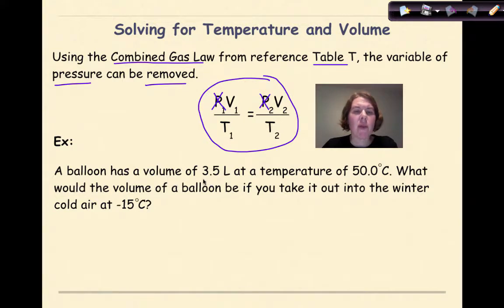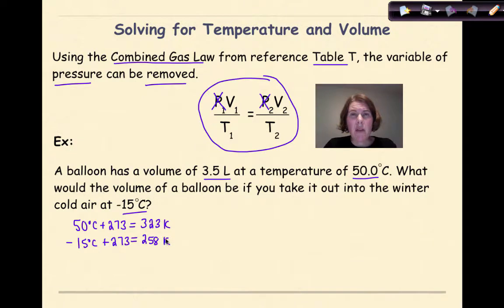A balloon has a volume of 3.5 liters at a temperature of 50 degrees Celsius. What would the volume of the balloon be if you take it out into the winter cold air at negative 15 degrees Celsius? The first thing that we want to do is convert our Celsius temperatures into Kelvin temperatures. So we're going to do 50 degrees Celsius plus 273, and if we add these two numbers together, we will get 323 Kelvin. Then we want to take negative 15 degrees Celsius and add 273, and when we add them together, we will get 258 Kelvin.